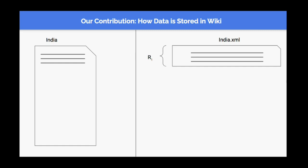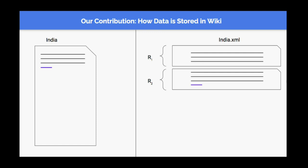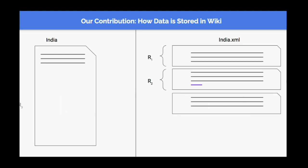Now suppose another, different user comes and writes a single line in the India article and saves it. What will happen in the backend is that the full current snapshot — whatever is in the current version of the India article — will get recorded as revision number two. And that's the redundancy. Now suppose user number three comes, sees that the new line which was added is not required, deletes that line and saves it. Again, whatever is the current snapshot of the India article will get recorded as a new revision.